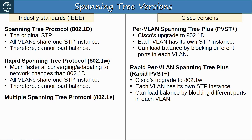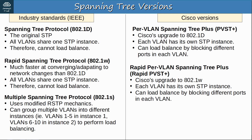The final version is multiple spanning tree protocol, IEEE standard 802.1s. It uses modified RSTP mechanics, but the main improvement is that it can group multiple VLANs into different instances — for example, VLANs 1 to 5 in instance 1, and VLANs 6 to 10 in instance 2, to perform load balancing. Finally, an industry standard version of STP that allows load balancing. If you have 200 VLANs, configuring primary and secondary root bridges in each VLAN is a lot of work. With MSTP, you just assign VLANs 1 to 100 to instance 1 and VLANs 101 to 200 to instance 2, then configure root bridges per instance — much easier to configure and manage.